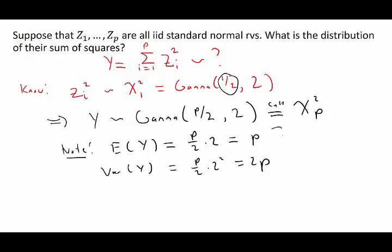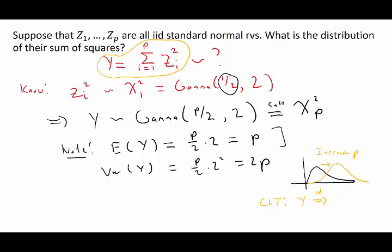Notice that as we increase p, the peak of the chi-squared distribution shifts to the right, which is exactly what we saw in the first pictures. Also, because the chi-squared arises as a sum of iid random variables, the CLT says that y, appropriately scaled, should approach a normal distribution as p goes to infinity — so the shape of this curve looks more and more normal as we increase p.